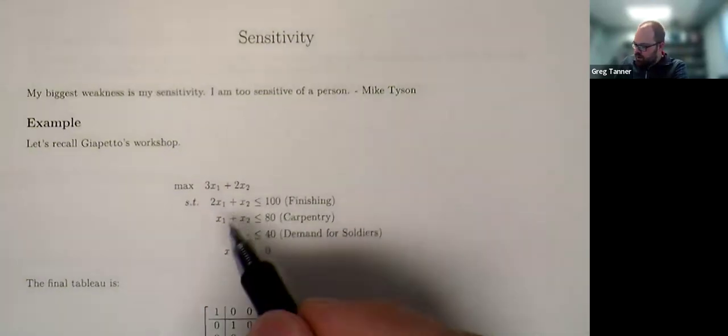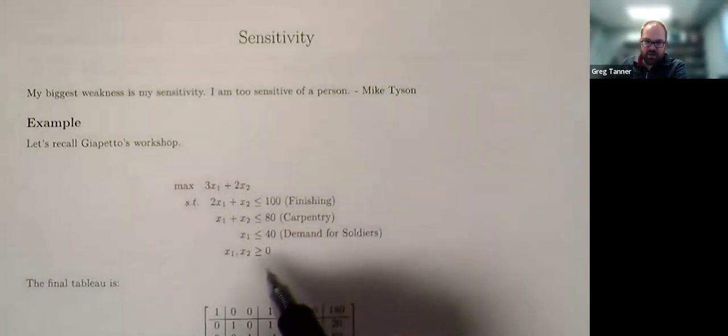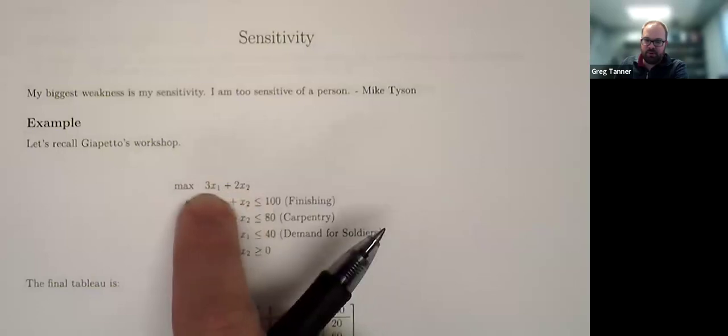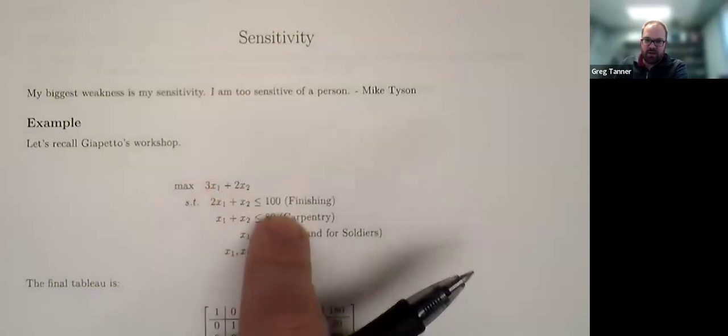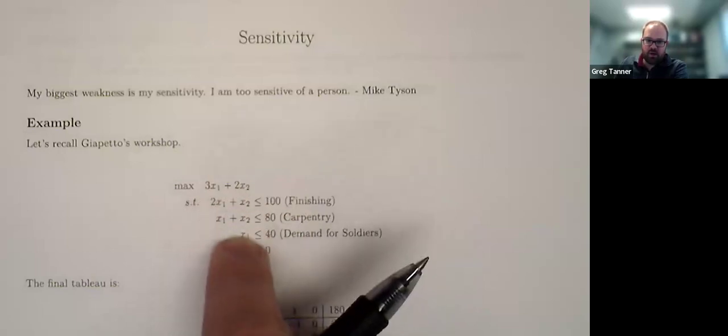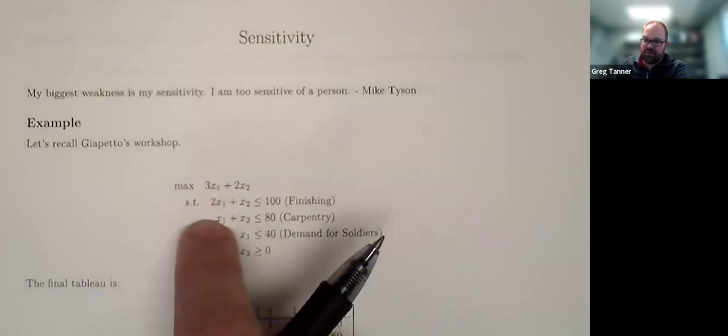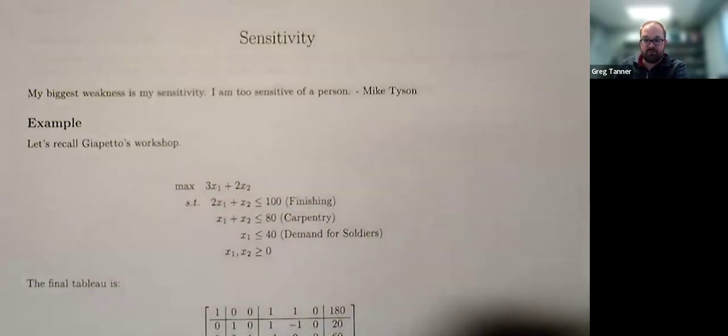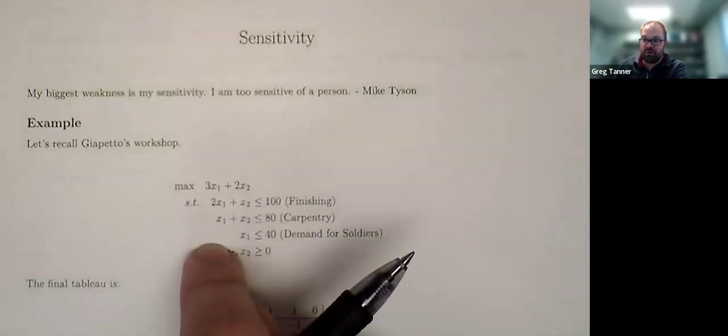Okay, we're going to go back to Geppetto's workshop here and we've got our objective and our constraints. We can think of each of the numbers that show up here. For example, the amount of profit for soldiers and trains, the amount of finishing, carpentry, and demand, as well as even the coefficients inside the constraints on the left-hand side. How is our answer, our final value, sensitive to those parameters of the problem?